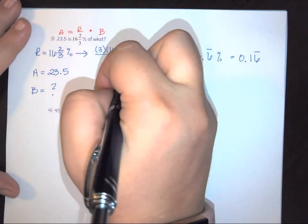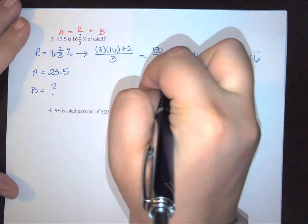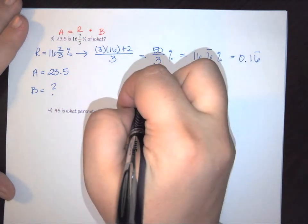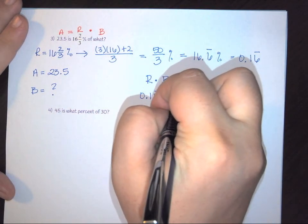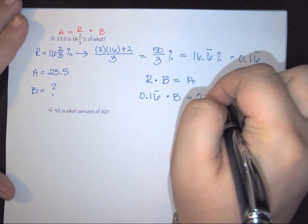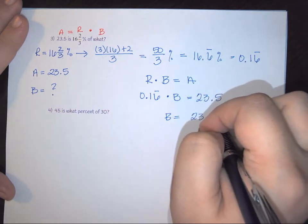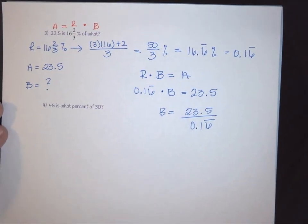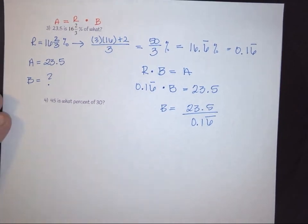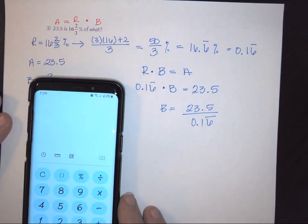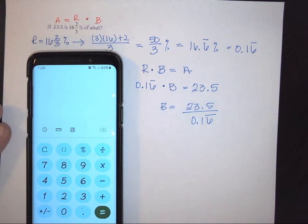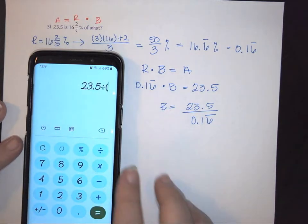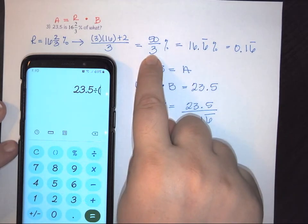So here we need to set up our equation. So we have R times B is equal to A. So here we're going to end up with our decimal. So 0.16 repeating times B is equal to 23.5. So B is going to be 23.5 divided by your repeating decimal. And so here the easiest thing to do is to be able to take your calculator. Okay, so let me clear it. And so here we're going to have to kind of work backwards. So what we know is we know that we have 23.5 and we're going to divide that by. And then in here we have our 50 over 3%.